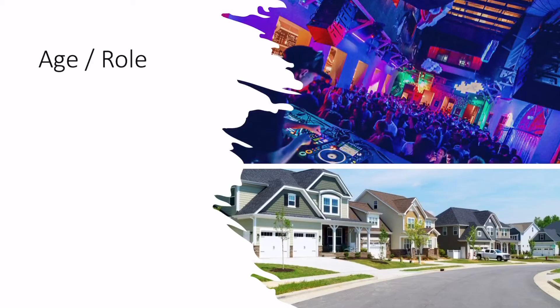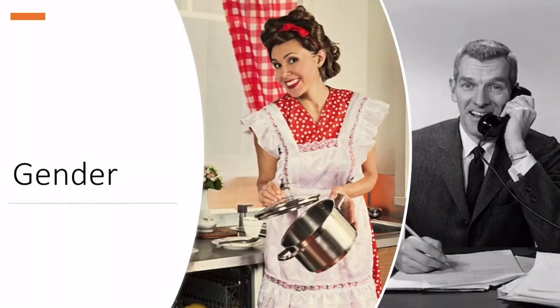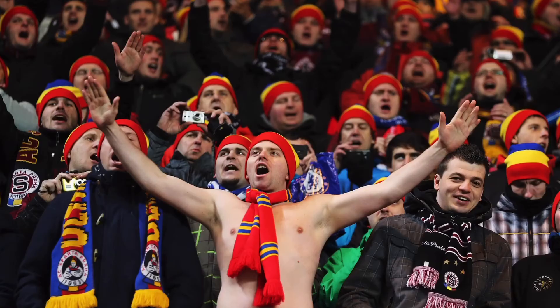If your role changes further — if you become a young professional with more money — you might want more space and lower-density housing. That is again how your perception of place changes as your age and potentially your role changes over time. Alongside age, gender is an important thing to consider when thinking about place. I've got pictures here of a traditional 1950s housewife and a 1950s male employee working in an office. At times we've had very traditional ideas of what we call a female place — the domestic sphere, women working in a kitchen — and male places in the public sphere, such as offices and factories.